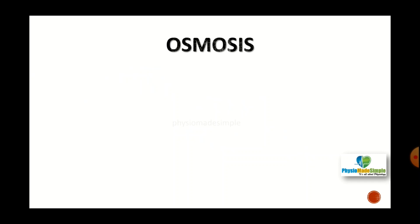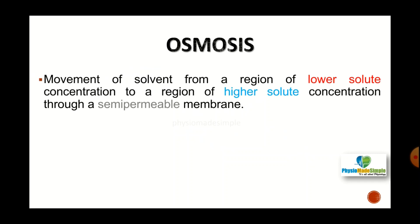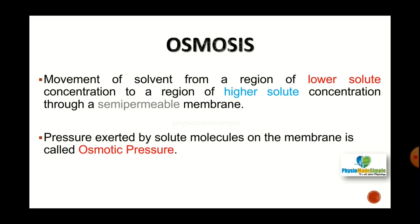The last type of passive transport is osmosis — the movement of solvent from a region of lower solute concentration to a region of higher solute concentration through a semi-permeable membrane. The pressure exerted by solute molecules on the membrane is called osmotic pressure. The semi-permeable membrane permits passage of only water or other solvents, but not solutes. Osmosis occurs whenever there is a difference in solute concentration on either side of the membrane.